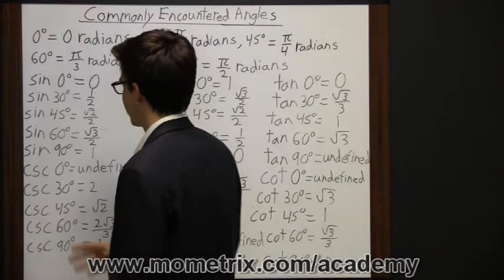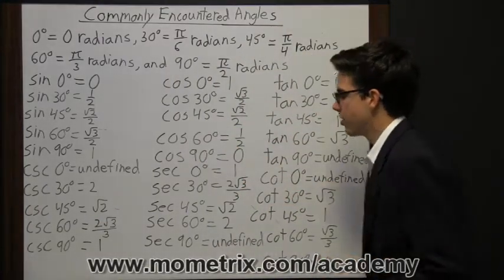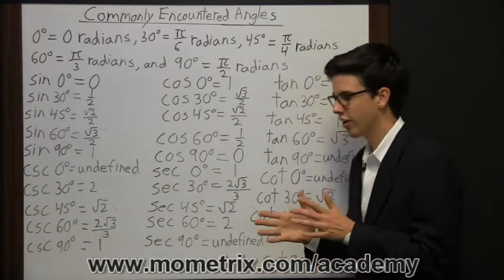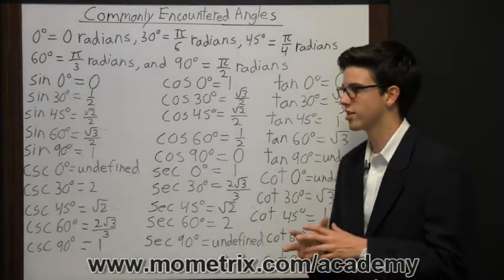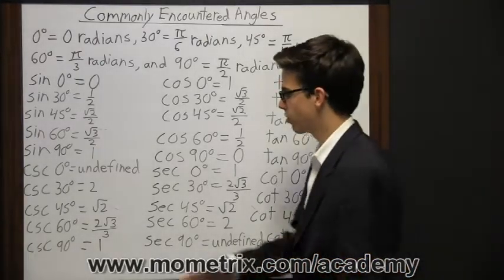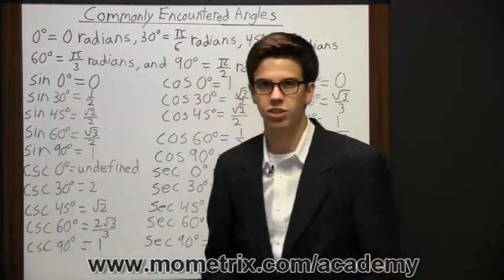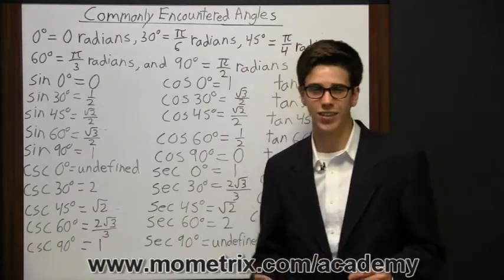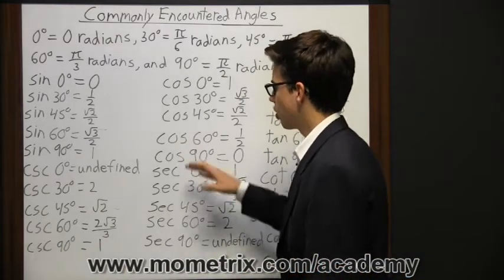So we have these trigonometric functions coupled with these different percentages and we're getting what those are equal to. The reason I have these up here is these are the simple angles, these are ones you're going to come across a lot because these numbers are all multiples of 15, a lot of them end in zero, so you're going to come across them a lot and they're fairly simple numbers.